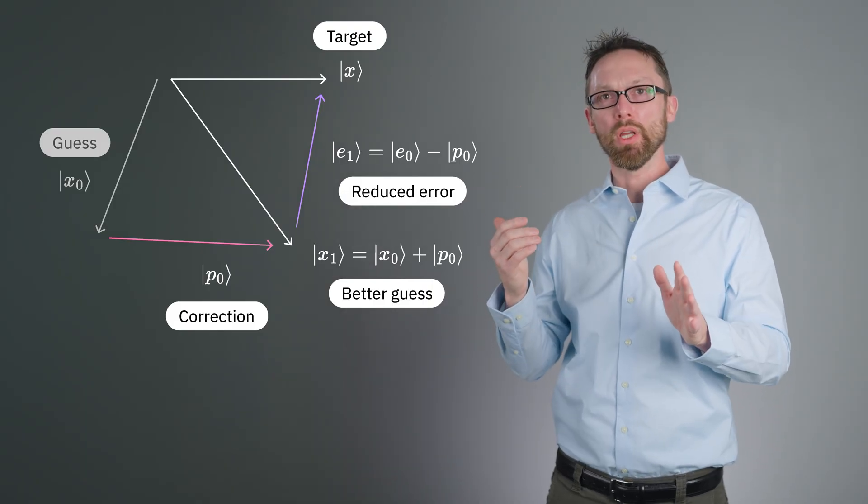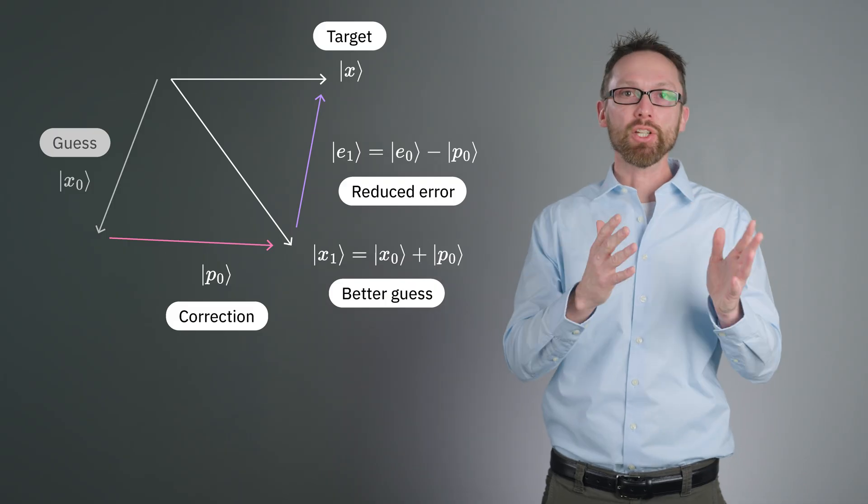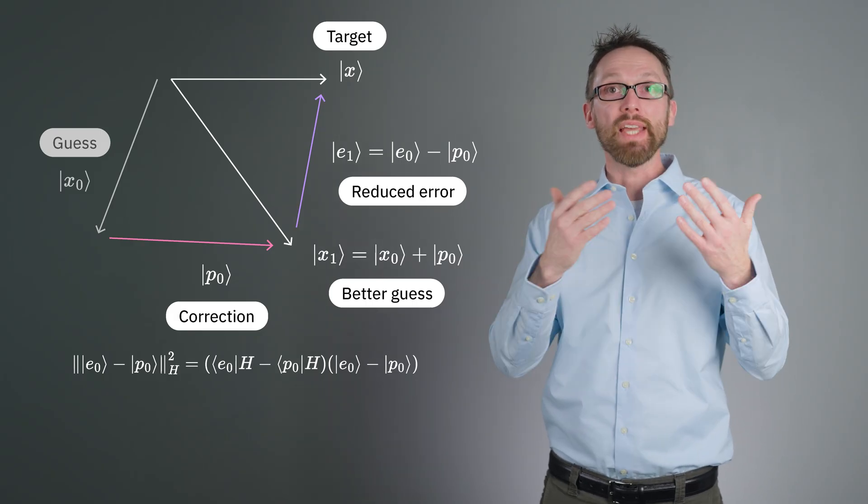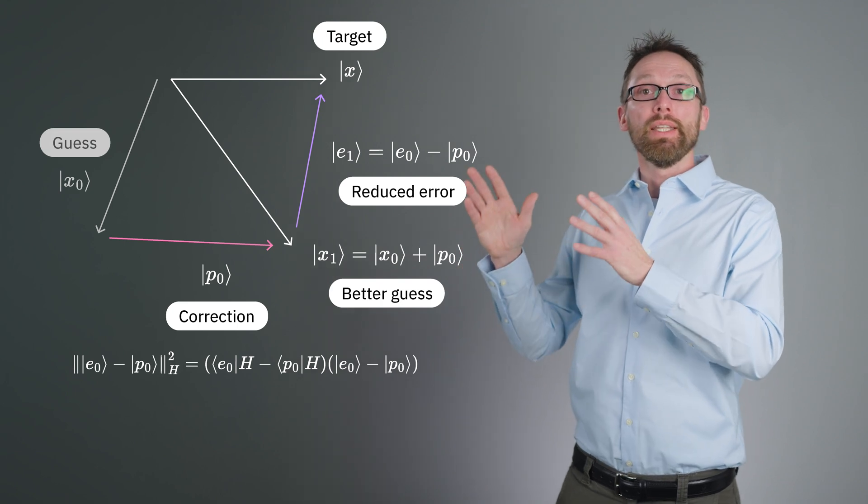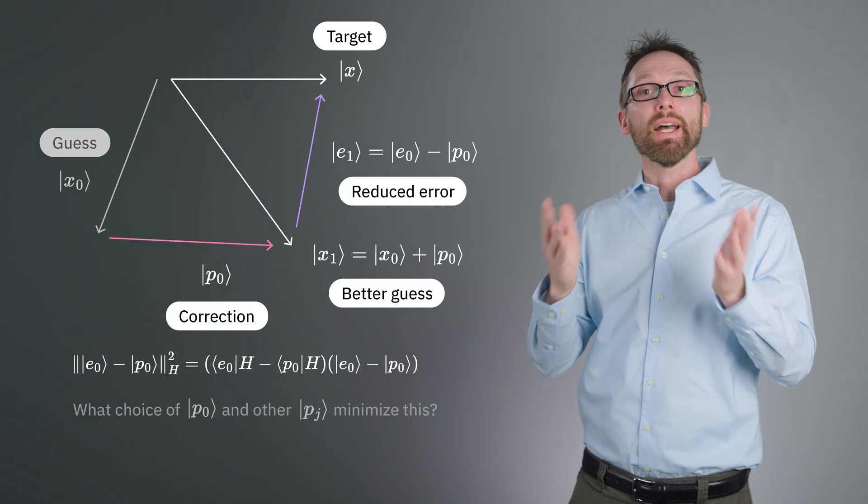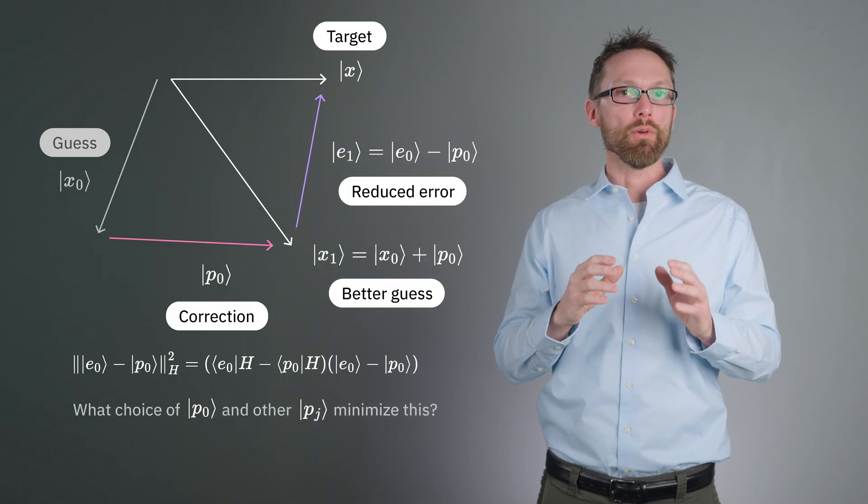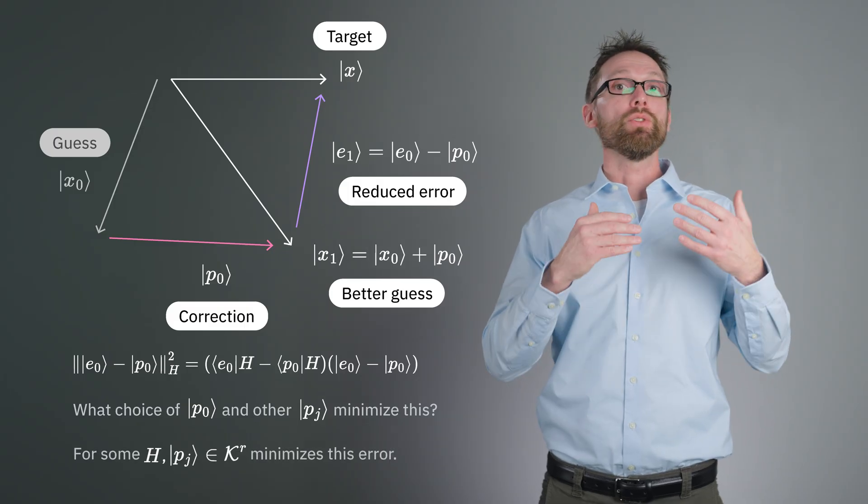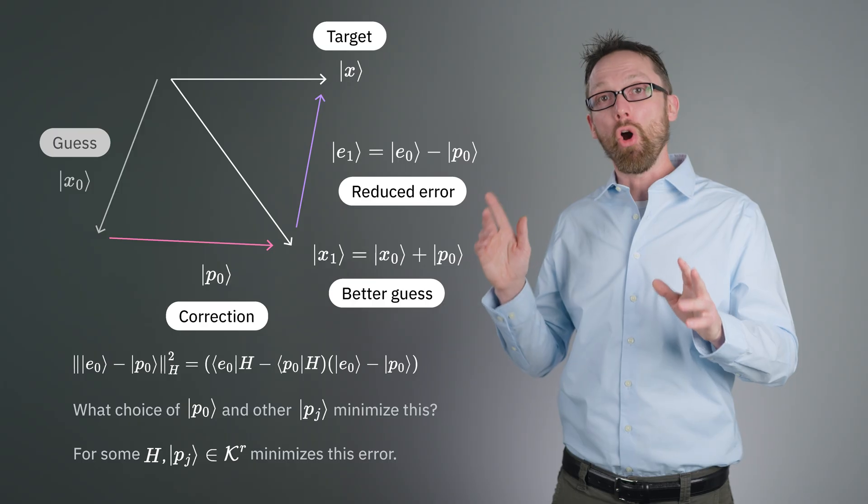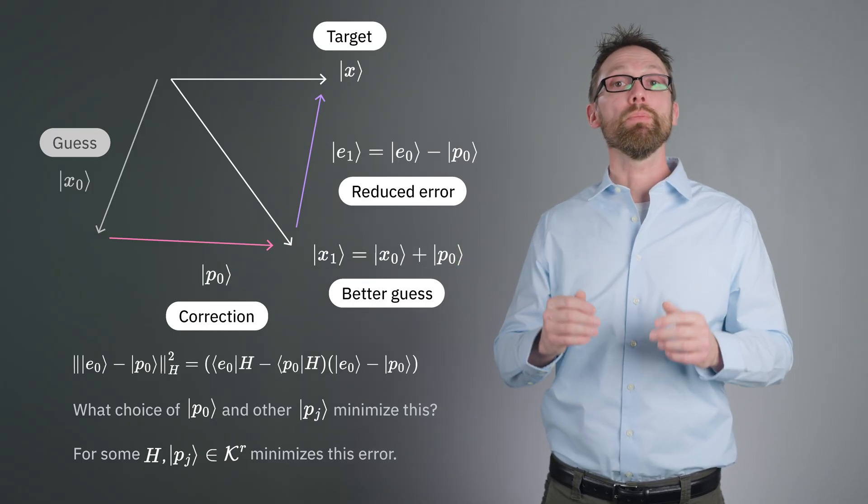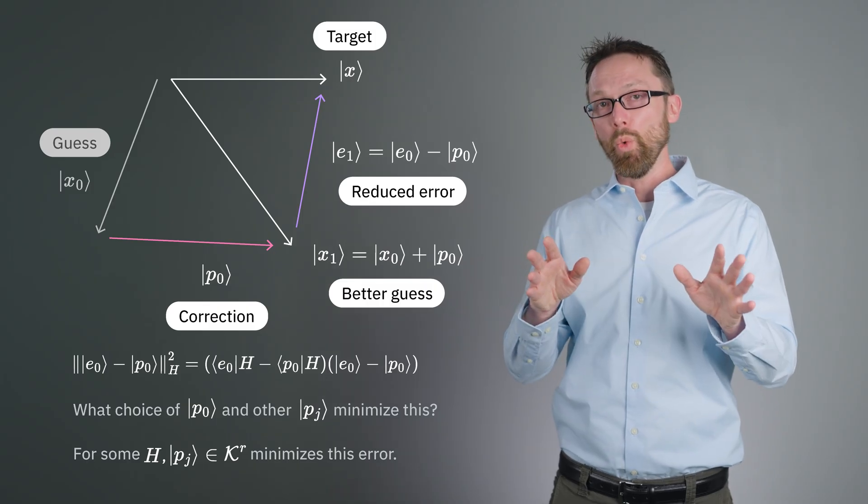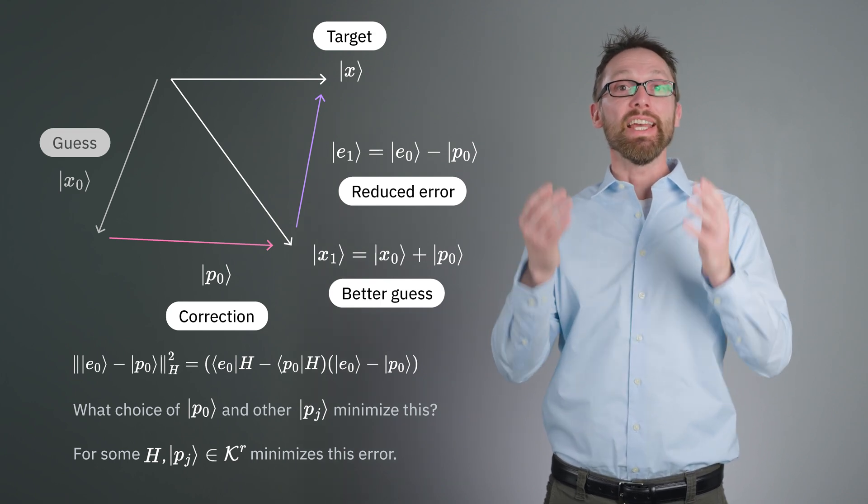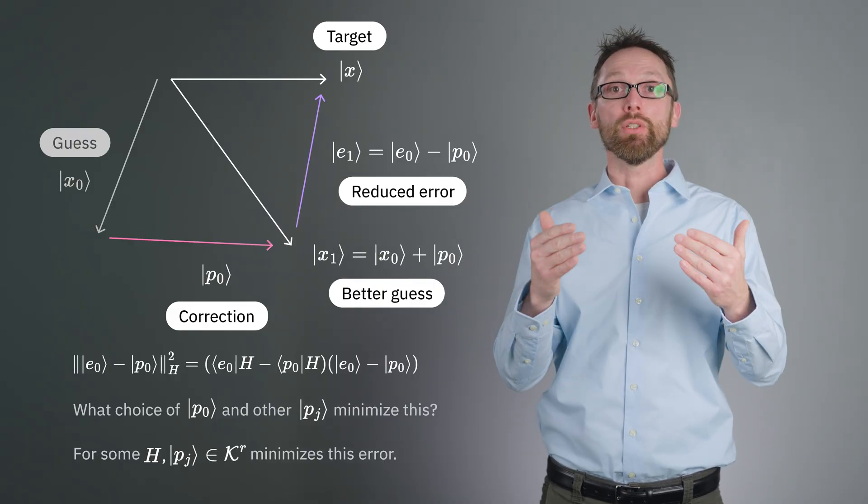Obviously, we want our error to be reduced. But it isn't just the state that we care about. We also care about the action of H on that state. So, the quantity we really want to minimize is the H-norm of this error, or the norm of the action of H on this error. Now we can see that this is an expression involving P0. And we can ask ourselves, what choices of P minimize this H-norm of the error most efficiently? From what space should we select the correction? Under certain conditions, such as when H is symmetric and positive definite, choosing the first R corrections from within kr turns out to be optimal.